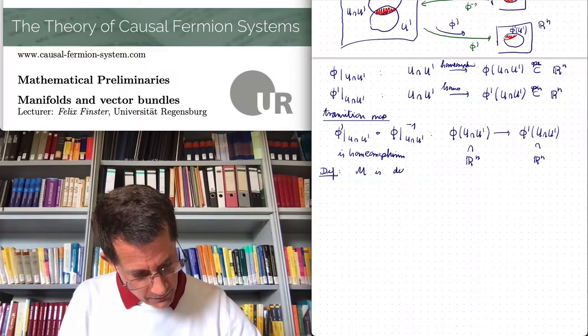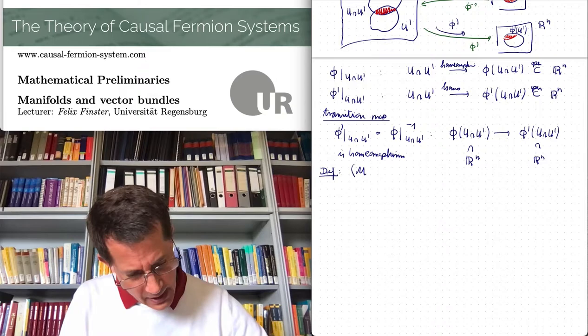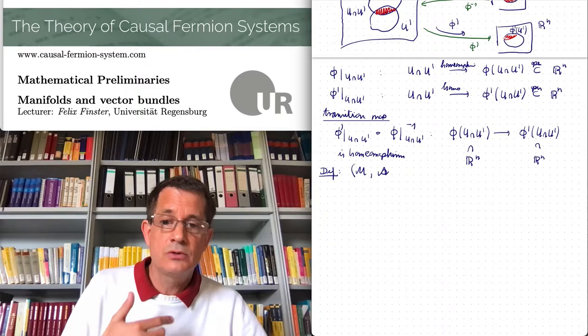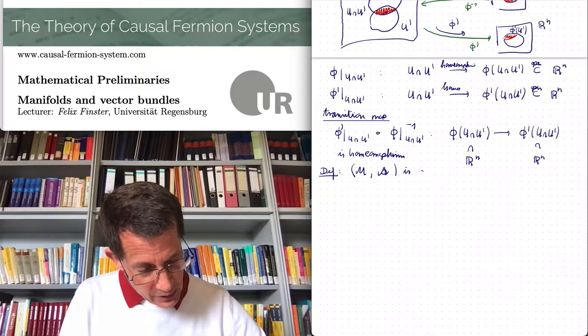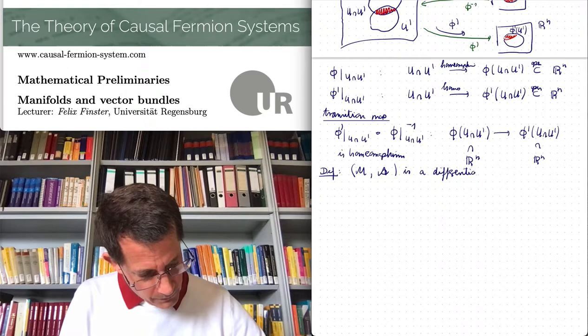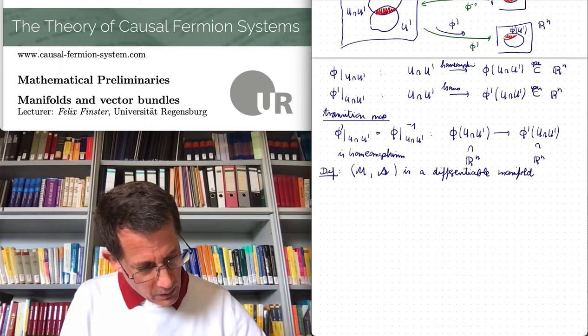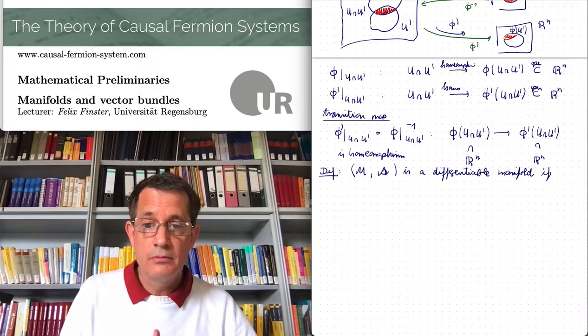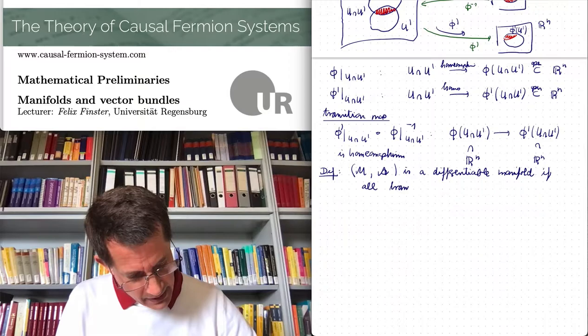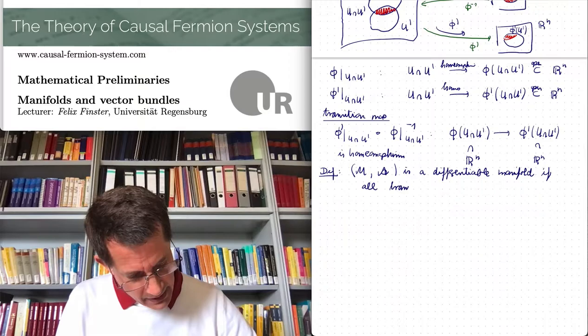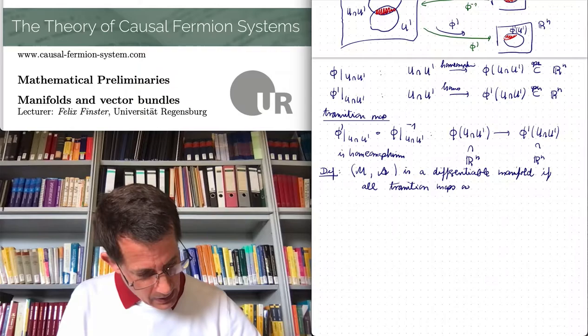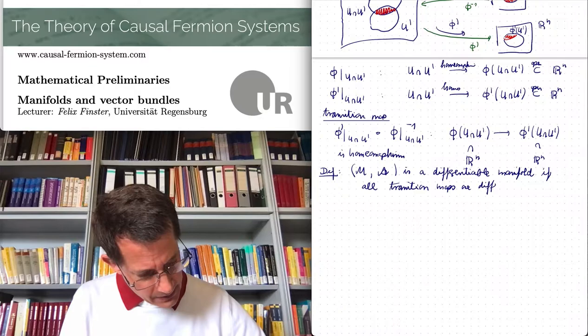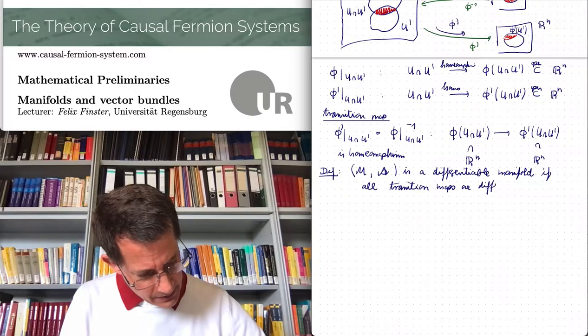The key point is that this transition map is a mapping from an open subset of R^n to another open subset of R^n. Since we are in R^n, we have additional structure — we can talk about differentiability, smoothness, and so on. Therefore we can define a differentiable manifold: the topological space together with the atlas of charts is a differentiable manifold if all the transition maps are diffeomorphisms — meaning not only homeomorphisms, but also differentiable with differentiable inverse.